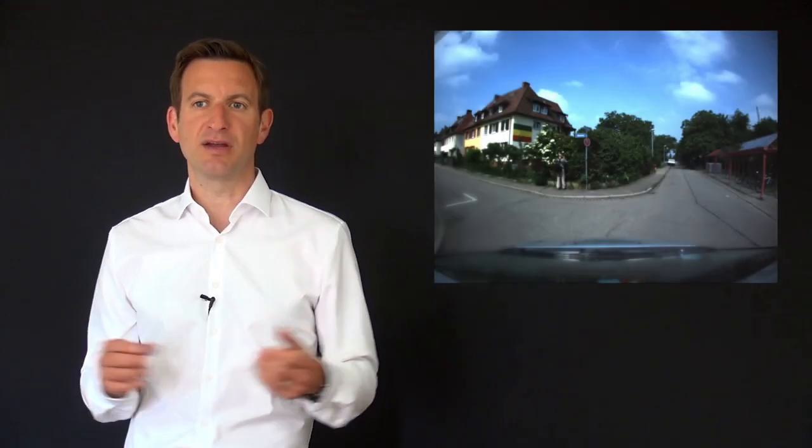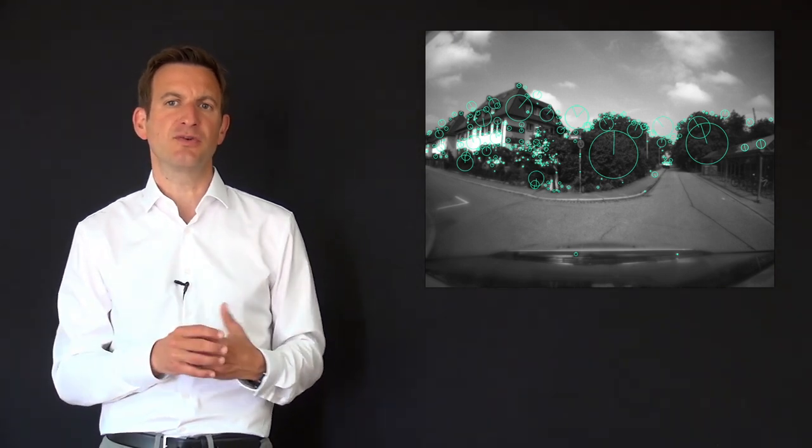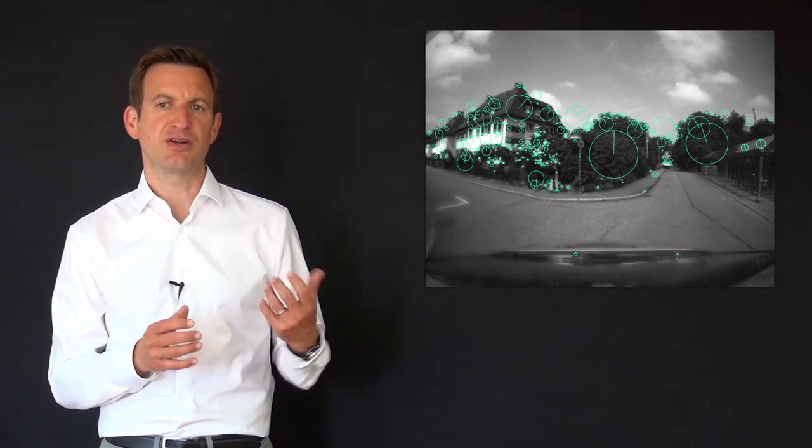So here's an example of a regular image. What we can do is extract key point locations at which we compute feature descriptors such as SIFT features, which are shown over here.